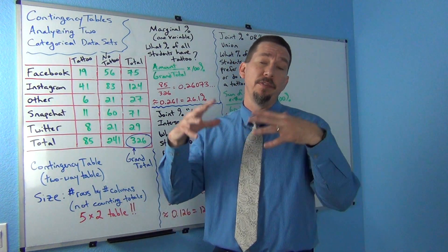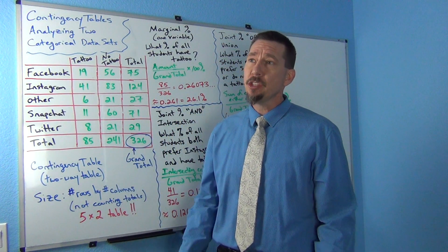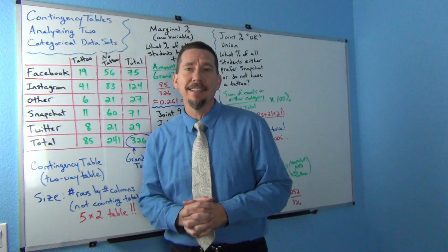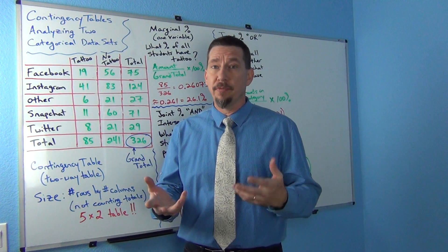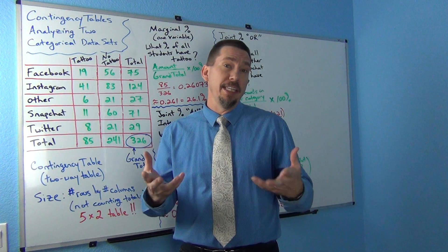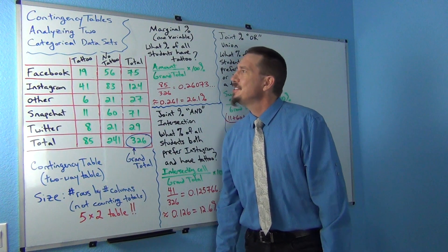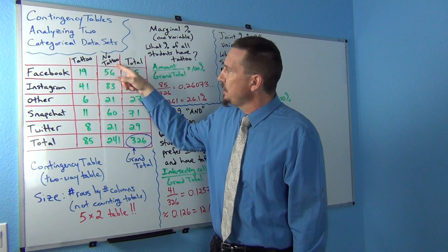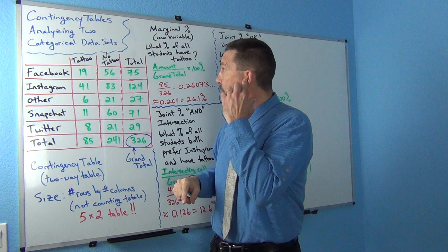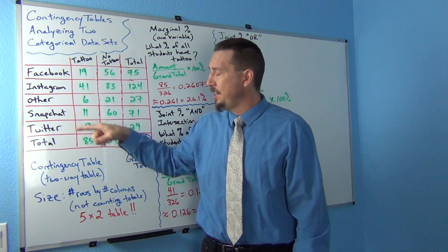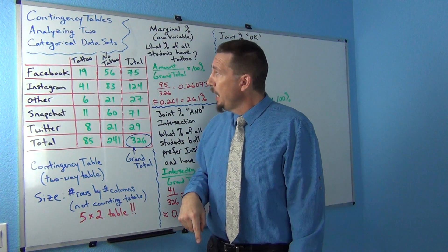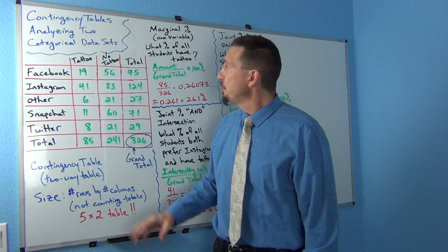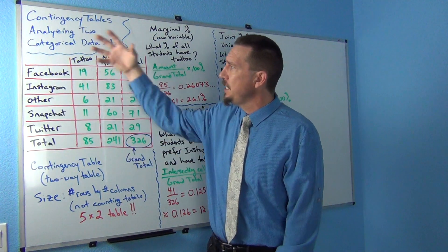A contingency table summarizes all the counts for two categorical variables. In fall 2015, we asked our statistics students at our college two questions: what social media do they prefer, and do they have at least one tattoo or not? You can see here we have 'tattoo' and 'no tattoo' columns, and the rows are Facebook, Instagram, Other, Snapchat, and Twitter. This is sometimes called a contingency table.